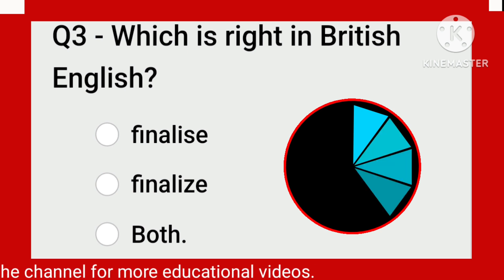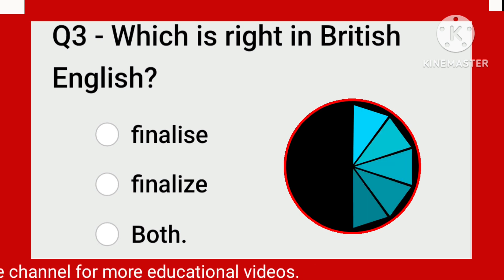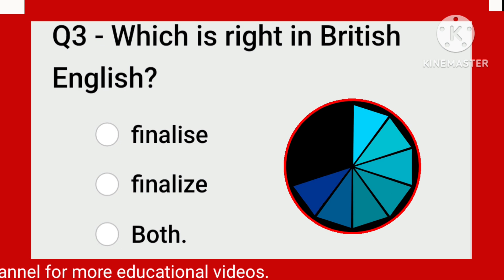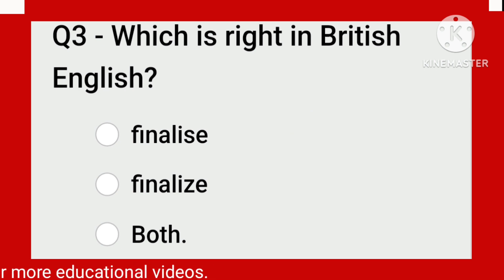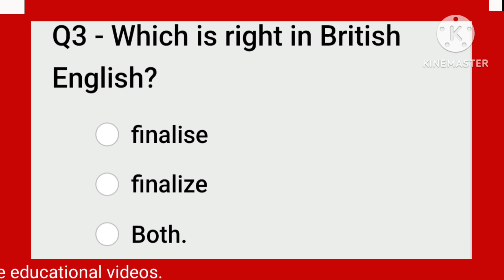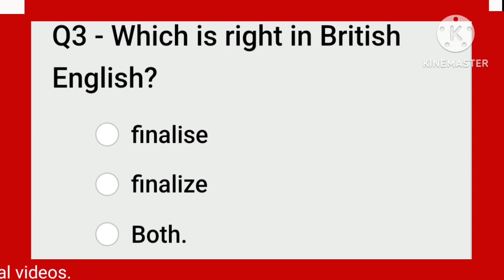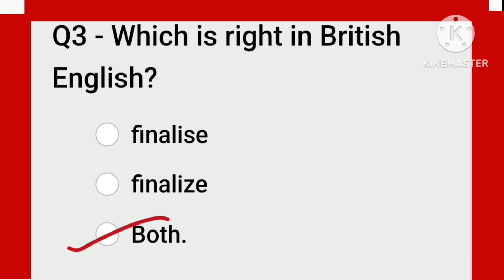Which is right in British English? In British English, as you have seen, many words end with S and some with Z. So according to British English, which one is correct? Both are correct — I-S-E and I-Z-E — both are correct, so both options are correct.